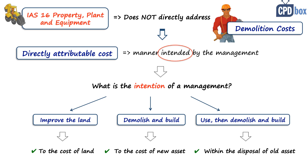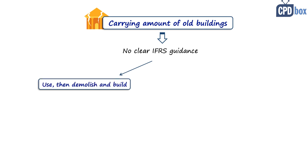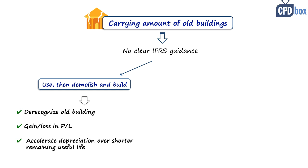That covers demolition costs themselves. But what should you do with the carrying amount of old structures or buildings — can you capitalize them to the cost of new buildings, or must you expense them? There is no clear IFRS guidance on this point, but there are accepted practices. If you previously used the old building and decided to demolish it and build a new one, you should simply de-recognize the old building with any gain or loss reported in profit or loss. There is usually a period between the decision to demolish and actual demolition, so you should probably accelerate depreciation over a shorter remaining useful life and test for impairment under IAS 36.